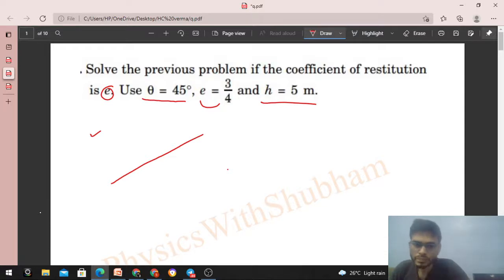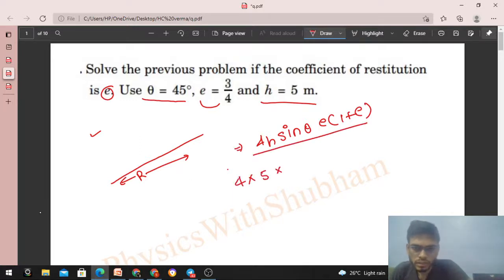So you just have to substitute the values there, like 4 into h ka value 5 ho jayega, sin θ will be 1 upon root 2, into e ka value will be 3/4 and 1 plus 3/4. So just solve it and you will get the answer, right?